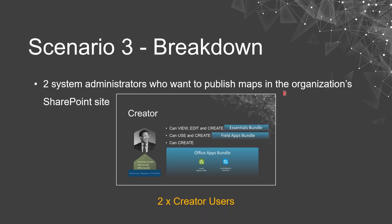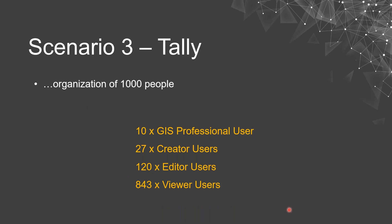Our two system administrators want to publish maps to the organization's SharePoint site. The creator user type has access to the office apps bundle, which includes ArcGIS Maps for SharePoint, so we'll grant two creator users for our two system administrators. Tallying our large organization of 1,000 people: 10 GIS Pros, 27 creator users (the 25 GIS analysts and 2 system administrators), 120 editors, and the remaining 843 can be granted complimentary viewer user licenses.